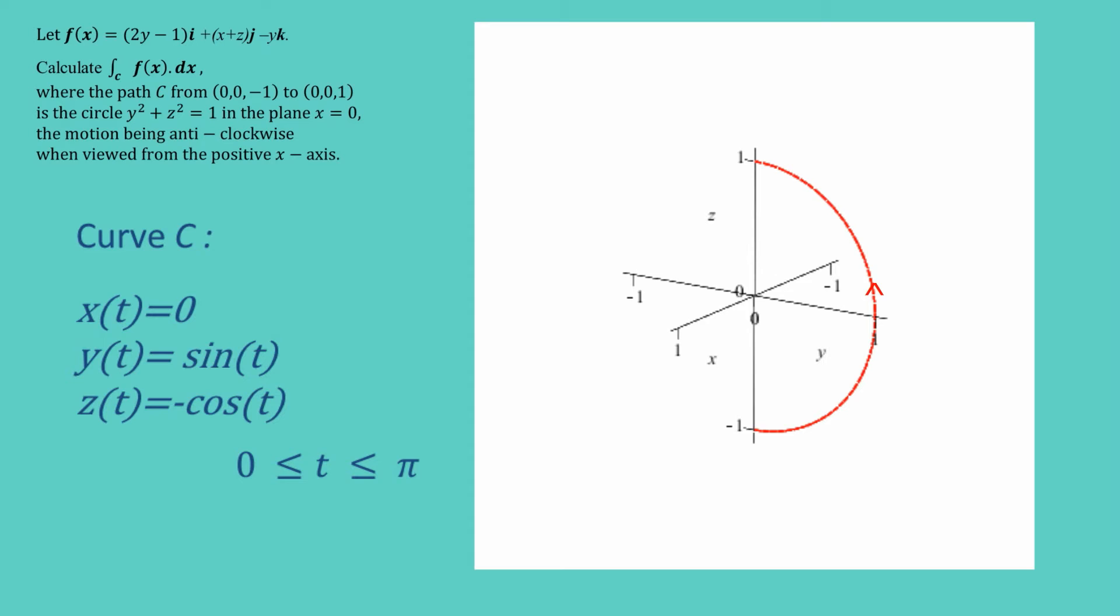And then I'll let x of t just be zero because x, you can see in the graph, x is always zero. So that's fine. I'm going to let y(t) equal sine of t and z(t) equal negative cos of t. And if you work through all that, you'll see that it actually does, as t goes from zero to pi, trace out this curve that you can see in red from the bottom to the top. So that's what we need to do with the curve.